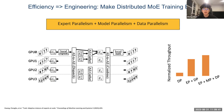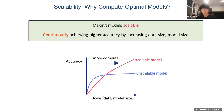Besides making models more efficient from an engineering perspective, we also want to make models more scalable. It means when we add more compute, data, and model size, we want to ensure our model can continuously achieve higher accuracy.